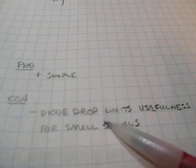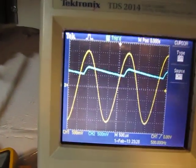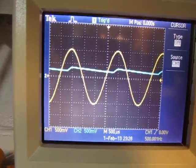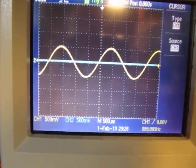But the con is that the diode drop limits its usefulness for small signals. If we take a look at this, and let me drop my signal level down. See, it's just barely detecting there. Go down one more click. I'm down here at now again, one volt peak to peak on the signal...